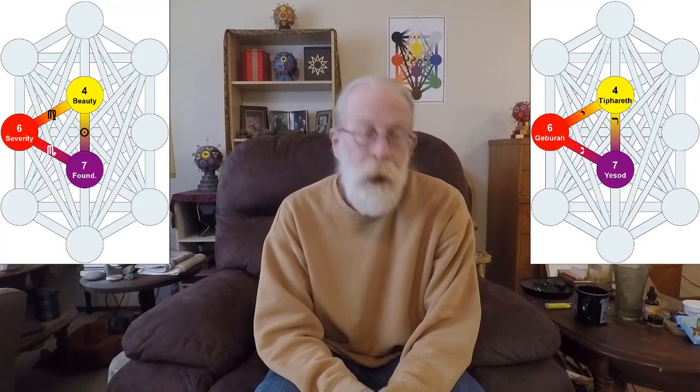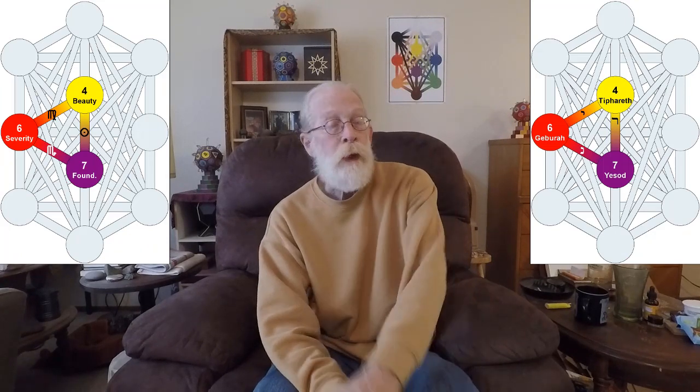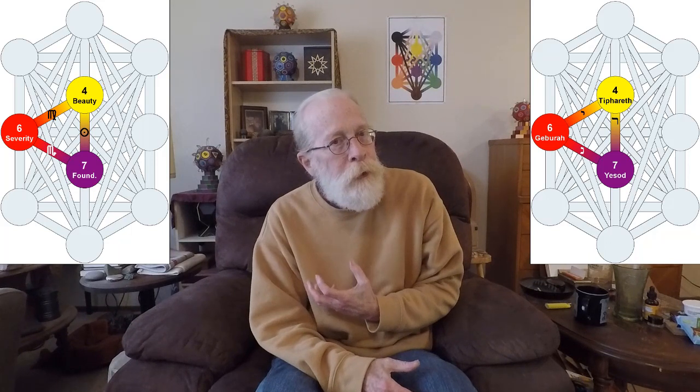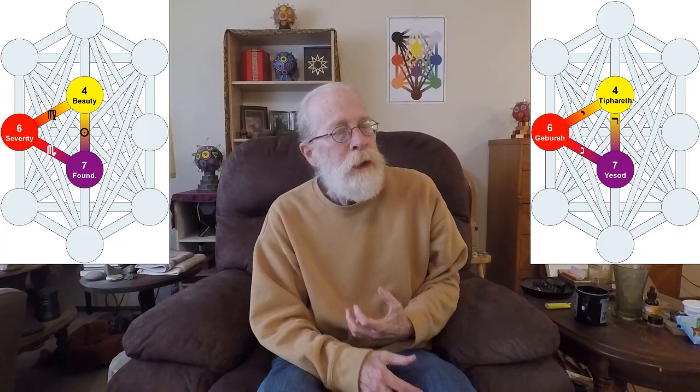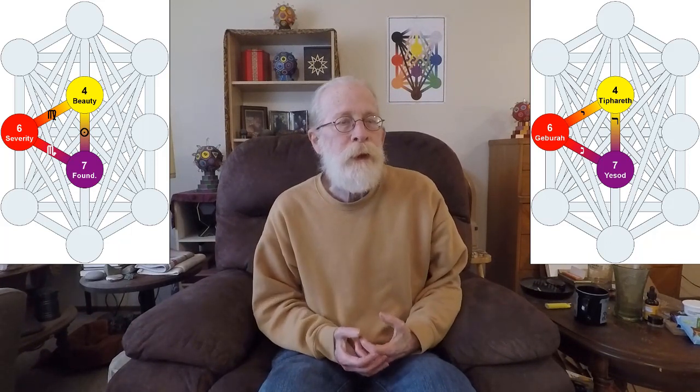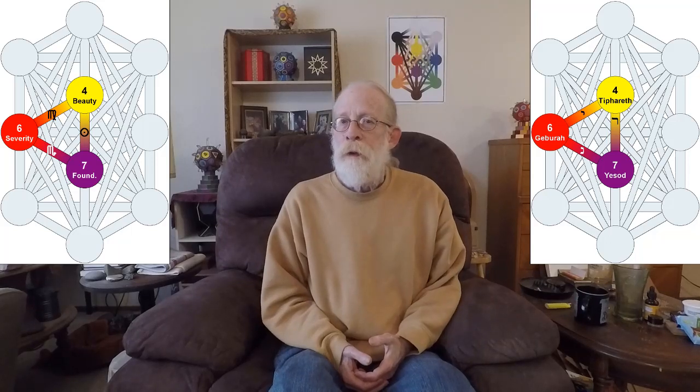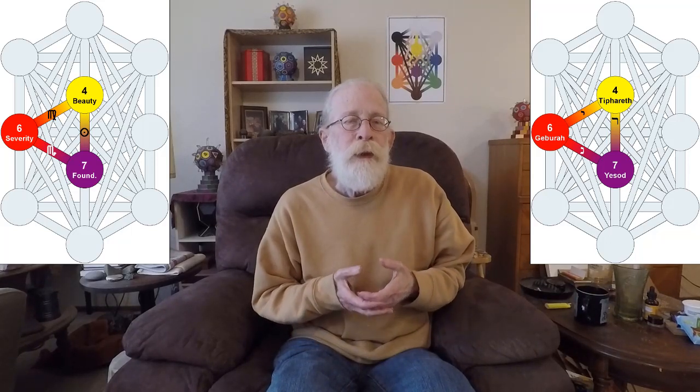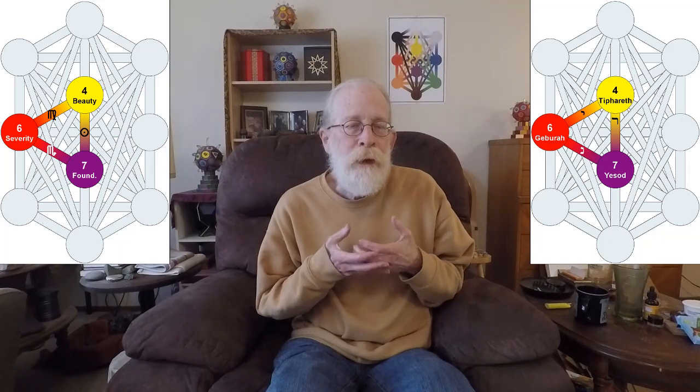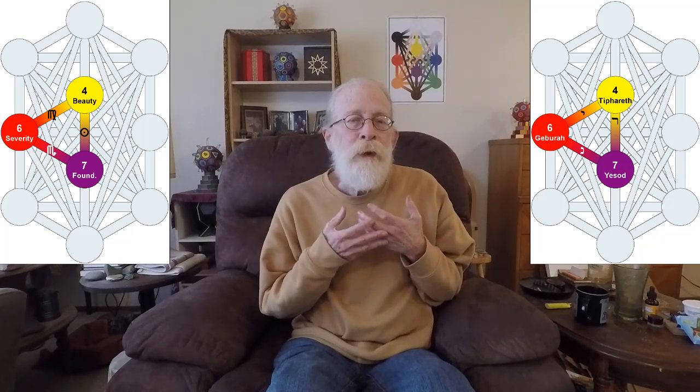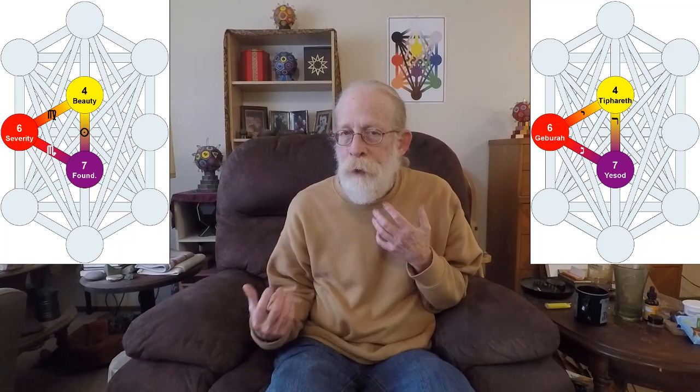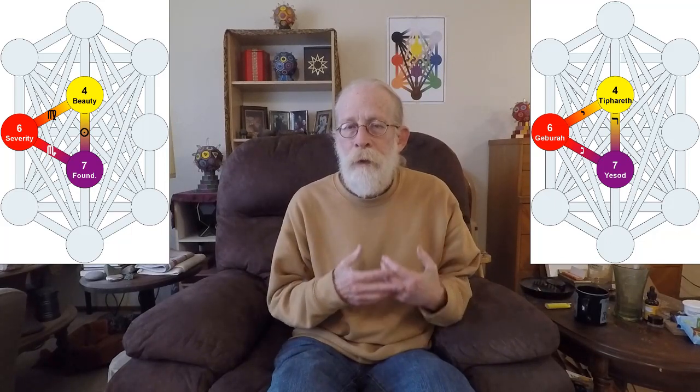So, the first triangle, we start from Gebura, go down via the path of Nun, that's self-determination, into Yassad, and then we come straight up the path of Resh into Tiferet. And then we take the path of Virgo down to Gebura, and then back around.